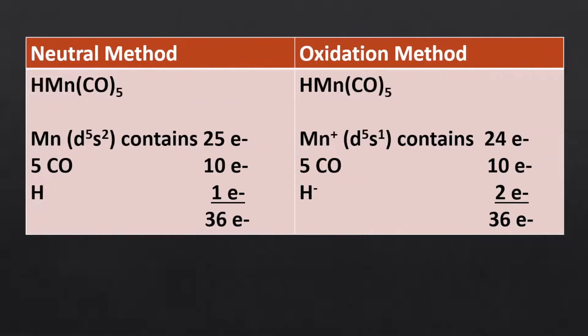Let me illustrate the covalent method and neutral method using the example of penta carbonyl hydrido manganese complex. First, using the neutral method: the atomic number of manganese is 25, so it will contribute 25 electrons. Each carbonyl ligand will donate 2 electrons, so 10 electrons from 5 carbonyl ligands. Hydrogen is a 1 electron donor. Consequently, the effective atomic number is 36.